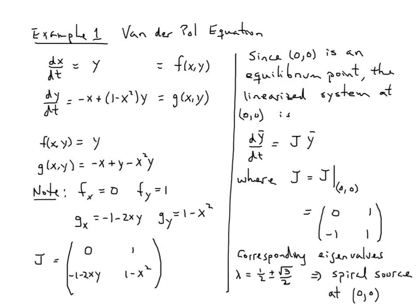So here's the general Jacobian that I can use for any equilibrium point. There is only one equilibrium point in this case at the origin, and I simply take (0,0), plug it in. This vertical line means it's being evaluated at (0,0). When you evaluate at (0,0), you get zero in the first position, one in the second position, minus one, and one.